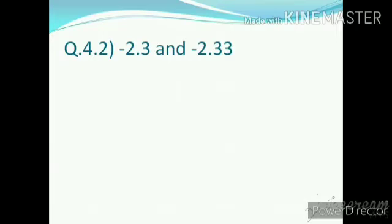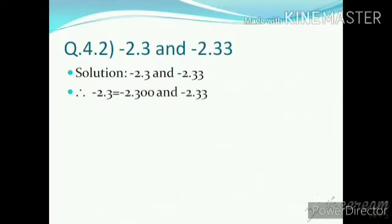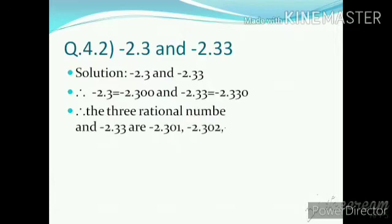Question number 2: between −2.3 and −2.33. We have to write any three rational numbers between these two. After the decimal, −2.3 has one digit and −2.33 has two digits, so we take one extra zero. Therefore −2.3 = −2.300 and −2.33 = −2.330, keeping equal digits after the decimal. Therefore the three rational numbers between −2.3 and −2.33 are −2.301, −2.302, and −2.303.